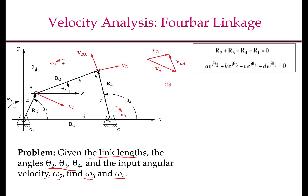Recall the loop closure equations written for position analysis. The vector r2 is the vector O2A, r3 is the vector AB, r1 is the vector O2O4, and r4 is the vector O4B. We have r2 plus r3 equals r1 plus r4, or r2 plus r3 minus r4 minus r1 equals 0. Here, r2 is a·e^(jθ2), where a is the length of link O2A; r3 is b·e^(jθ3); r4 is c·e^(jθ4); and r1 is d·e^(jθ1), where d is the length of the fixed link. Theta 1 is usually constant, and in this picture theta 1 is 0.